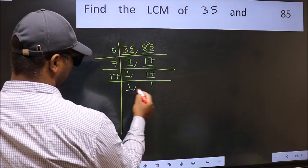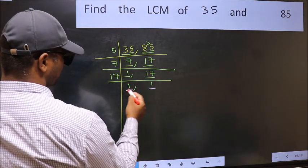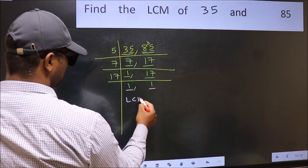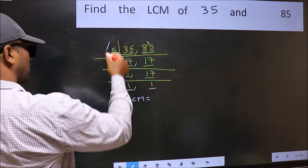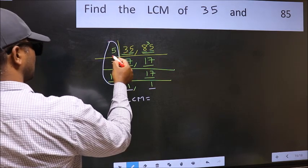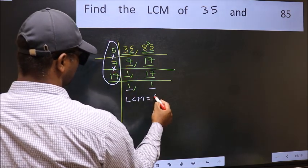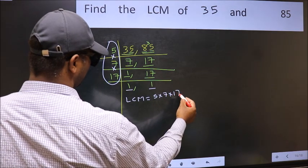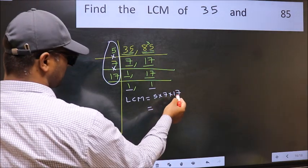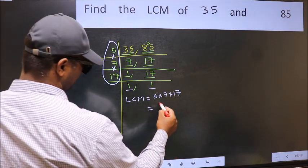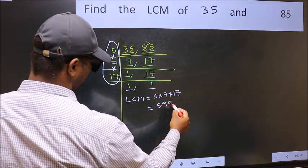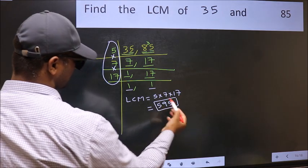So we got 1 in both places. So our LCM is the product of these numbers, that is 5 into 7 into 17. When we multiply these numbers, we get 595 is our LCM.